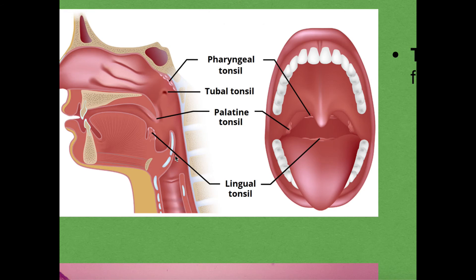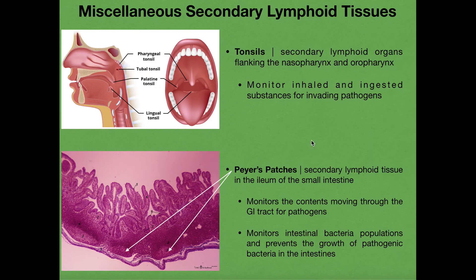The contents that the tonsils monitor is different because they're situated in the pharynx — just beyond the nasal cavity and behind the oral cavity — so they monitor inhaled and ingested substances for invading pathogens. If you have a pathogen that you inhale or that is in your food, the tonsils can mount an immune response against it, because B and T cells in the tonsils can flag that pathogen for destruction.